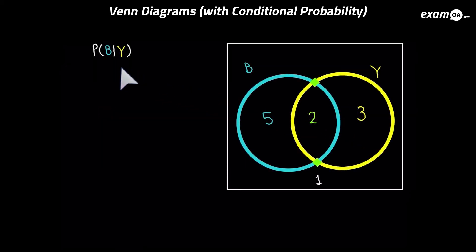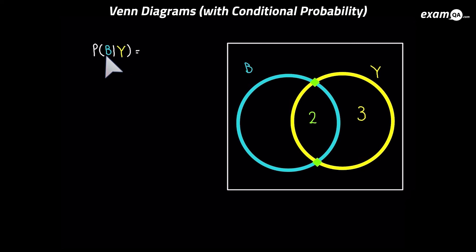This question asks for P(B|Y) — the probability of B given that Y has already happened. Since we know Y has already happened, there's no point looking at anything else — we only look at Y. From the remaining numbers, only 2 is in B. So it's going to be 2 over the total. It's not 11 because the other numbers are gone — it's 2 over 5.